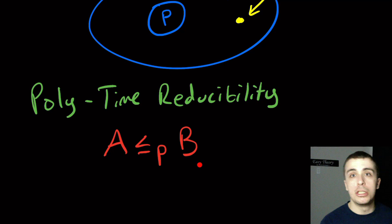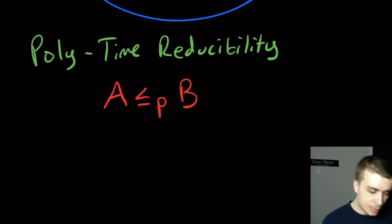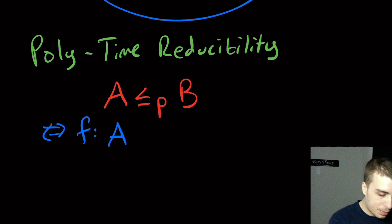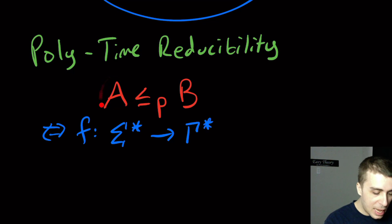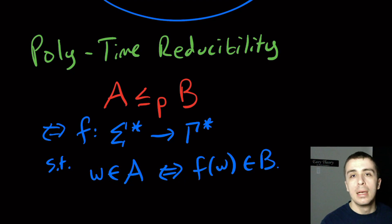And the way that we write this is A ≤_P B. So problem A poly reduces to B. The P here was M before when we talked about mapping reducibility, here is polynomial time reducibility. And what this is saying is if and only if there's some function F taking strings from sigma star going to gamma star, where A is a language over sigma star and B is a subset of gamma star, such that a string W is in A if and only if F(W) is in B. So this is the exact same notion as reductions before.